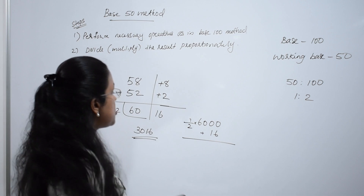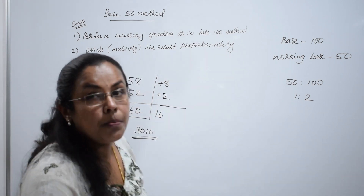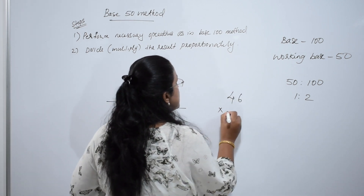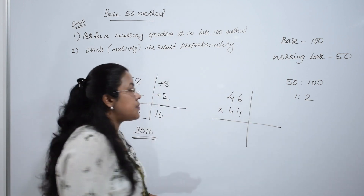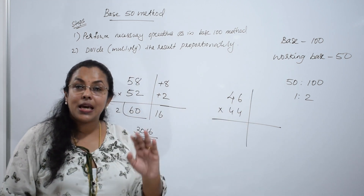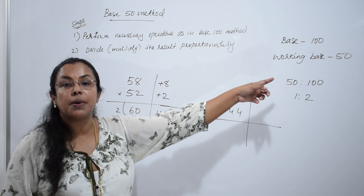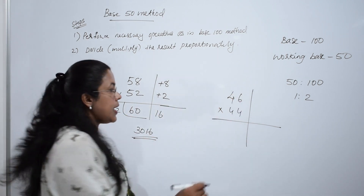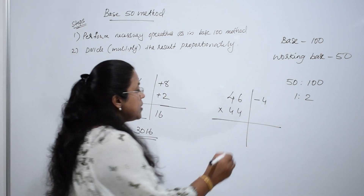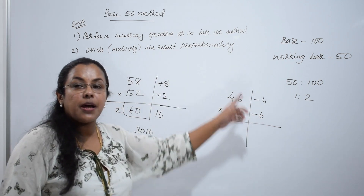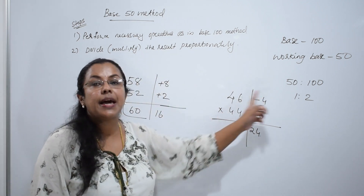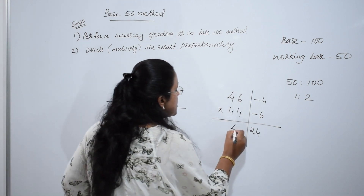We will do one more question. In the first question, both numbers were above the base. Now both numbers are below the base. Suppose we want to multiply 46 and 44. 46 is 4 less than 50 — write minus 4. And 44 is 6 less than 50 — write minus 6. Multiply vertically: 6 fours are 24. Now subtract diagonally: 44 minus 4 is 40.